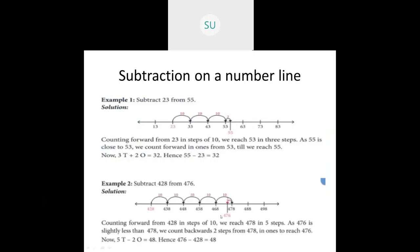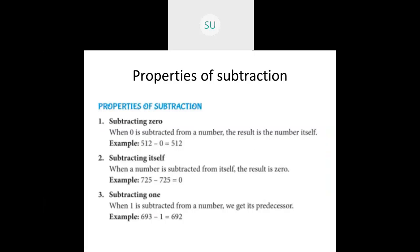We saw various examples for subtraction on a number line. Then we studied the different properties of subtraction. The first property is subtracting 0: when 0 is subtracted from a number, the result is the number itself.